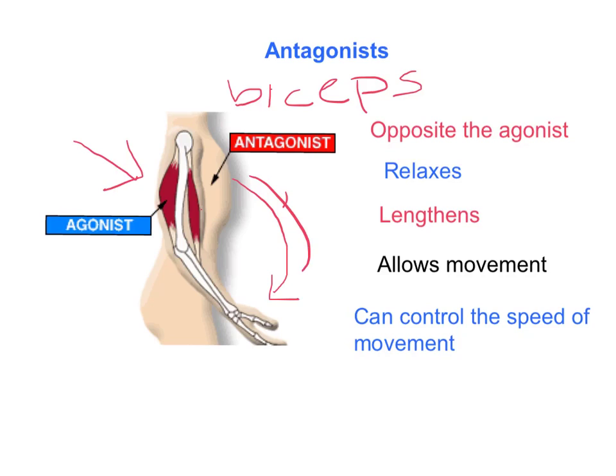So this is the antagonist muscle — the bicep muscle — and the agonist is the tricep. In our previous picture with the bicep curl, the bicep was the agonist muscle. Muscles can be either agonist or antagonist — they always work in pairs.